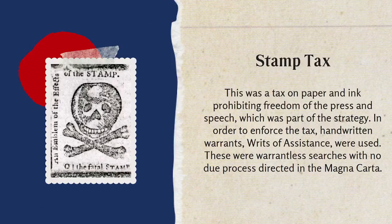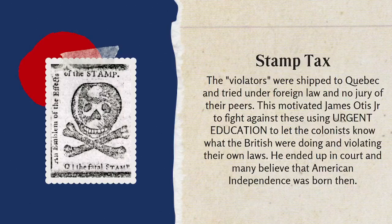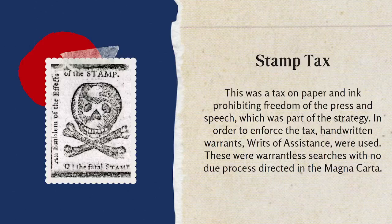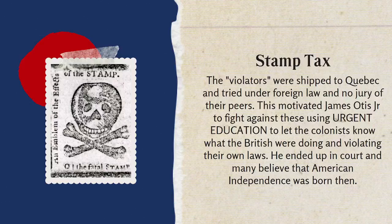The grievance about being deprived of trial by jury connects to the writs of assistance. What would happen is they would go into homes and not only search for improper use of untaxed paper and ink, but the searchers would take whatever they wanted — money, jewels, clothes, furniture. There was no way to stop it. Violators were shipped to Quebec and tried under foreign law with no jury of their peers. That's why these provisions appear in the Declaration of Independence among the grievances.